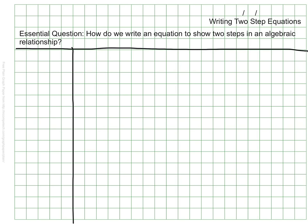Our essential question is a follow-up to a previous lesson we have done, which is: How do we write an equation to show two steps in an algebraic relationship?